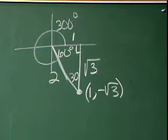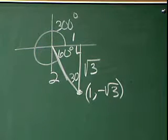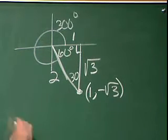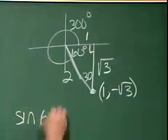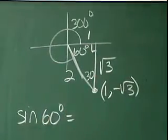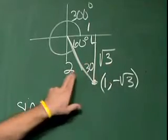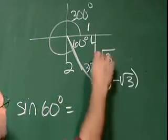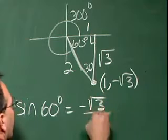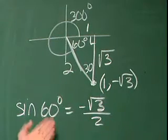So any of the trig functions that involve the y value will be negative. So, let's find the sine of 60 degrees. The sine of 60 degrees will be the side opposite over the hypotenuse.